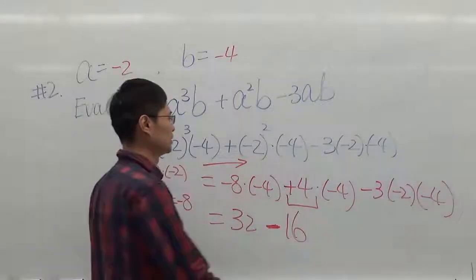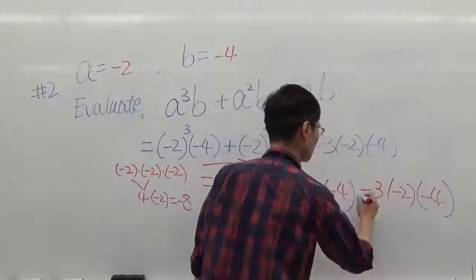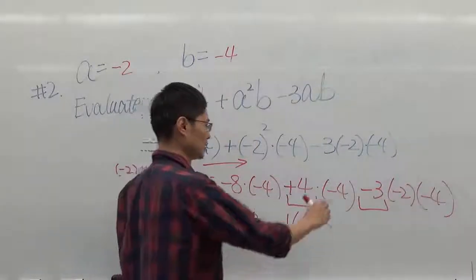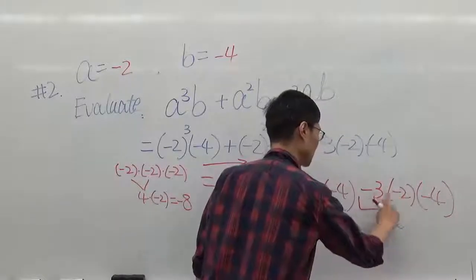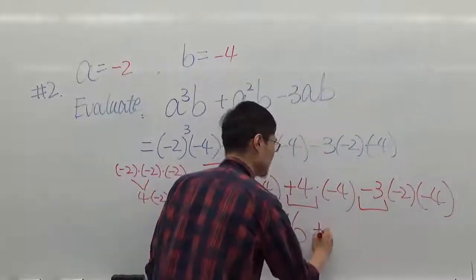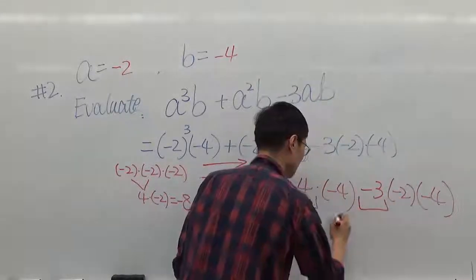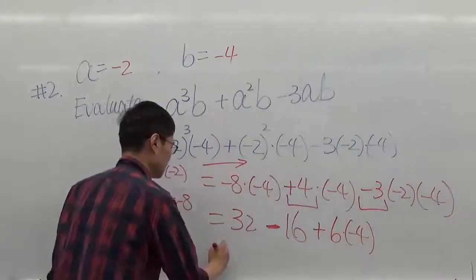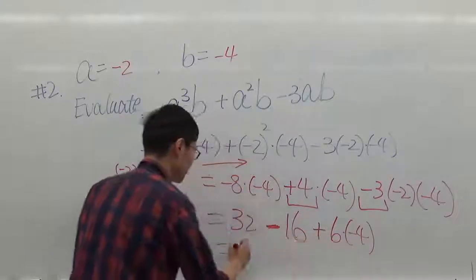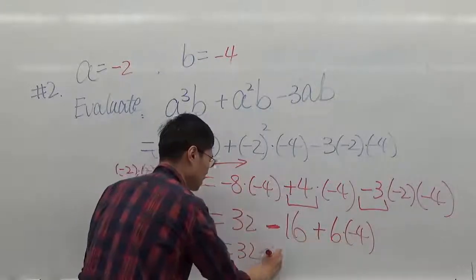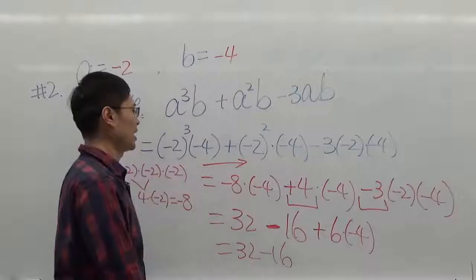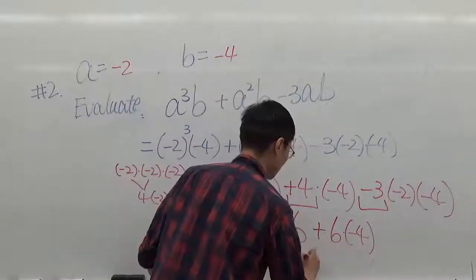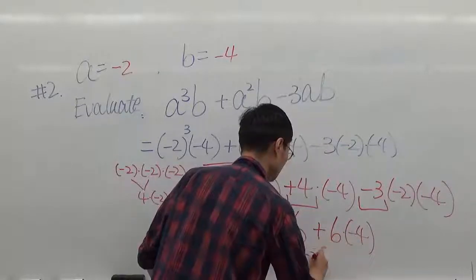For the last term, we do it one by one: negative 3 times negative 2 — negative times negative is positive — 3 times 2 is 6, then times negative 4. So positive 6 times negative 4 is negative 24. Now we have: 32 minus 16 minus 24.